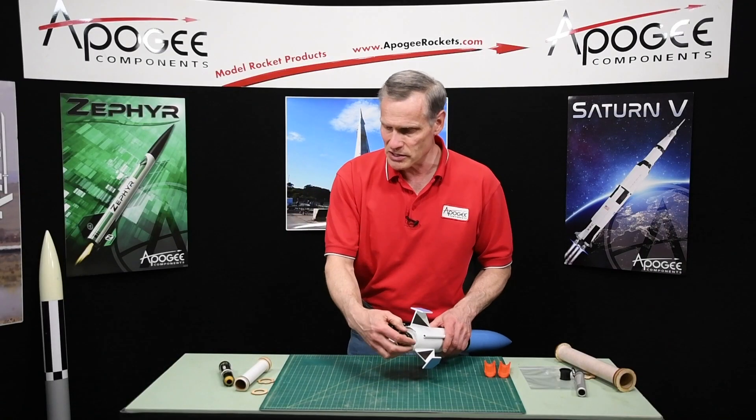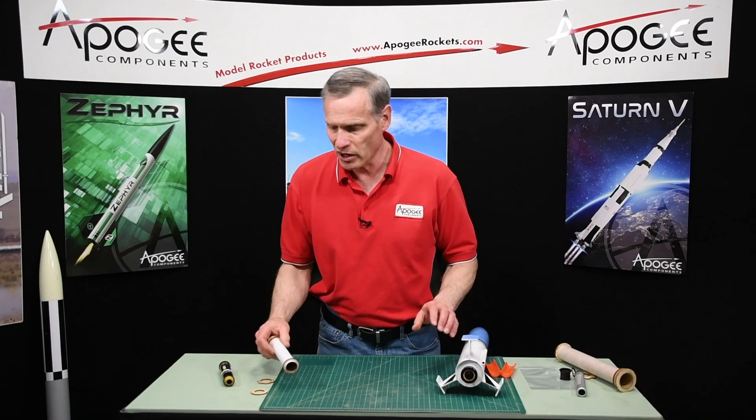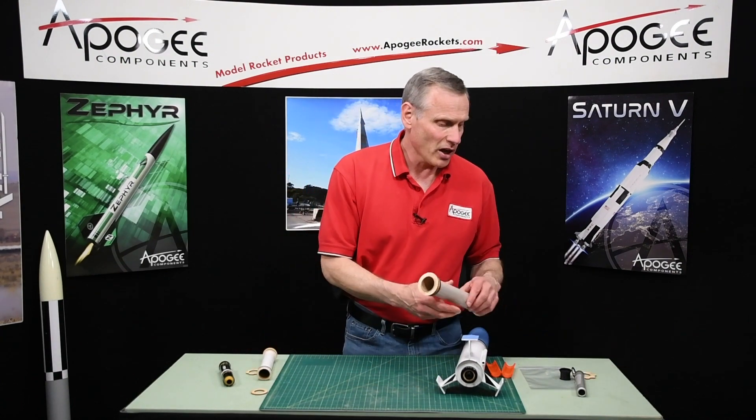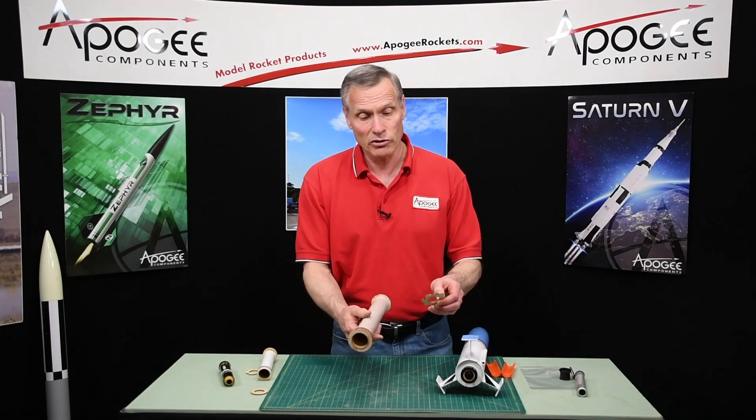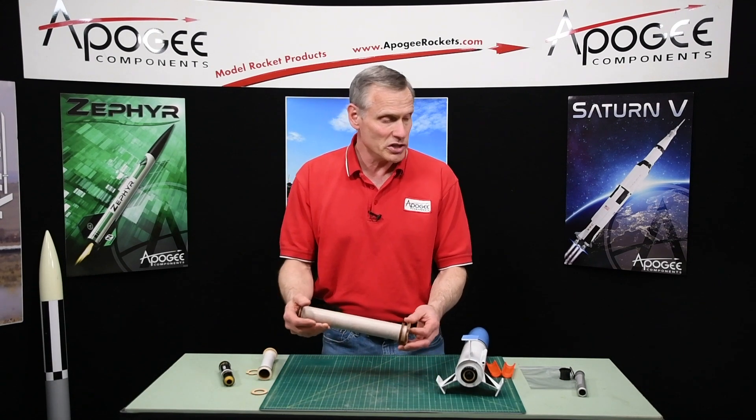Now we have these in three different sizes. This is the 24 to 29 millimeter. We have a 29 to 38 millimeter, and we have a 38 millimeter to 54 millimeter, so you have most of all your engine combinations in there.